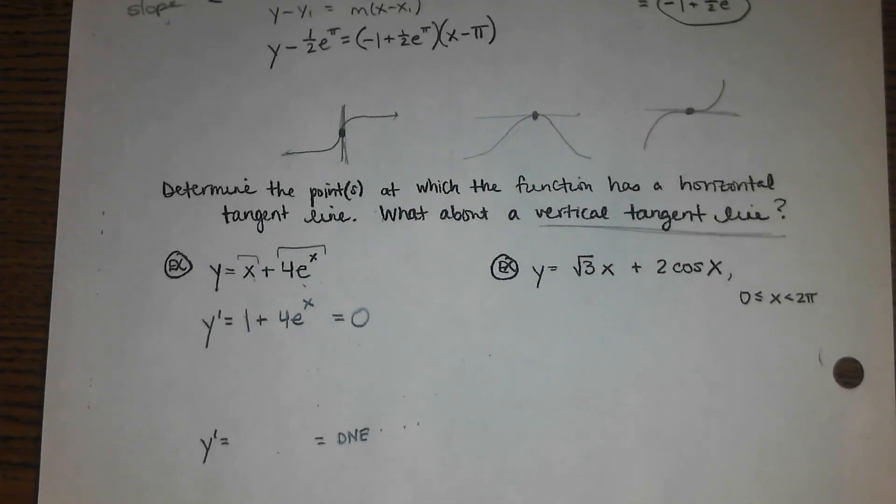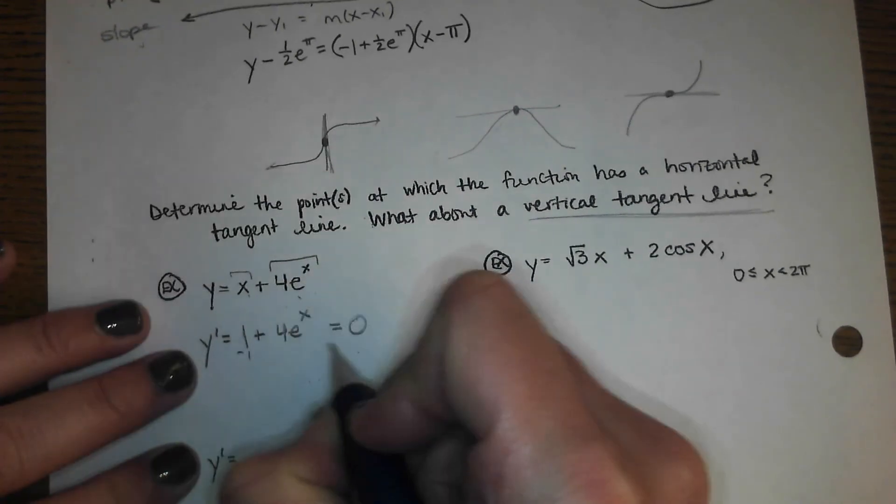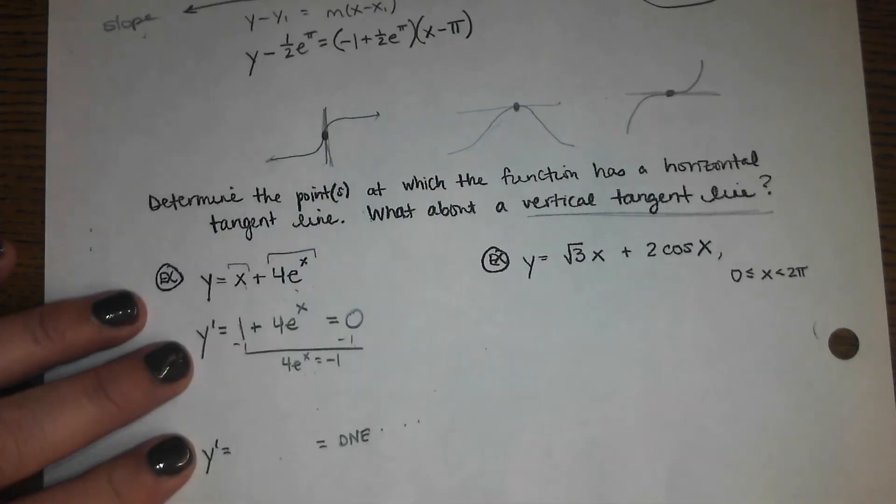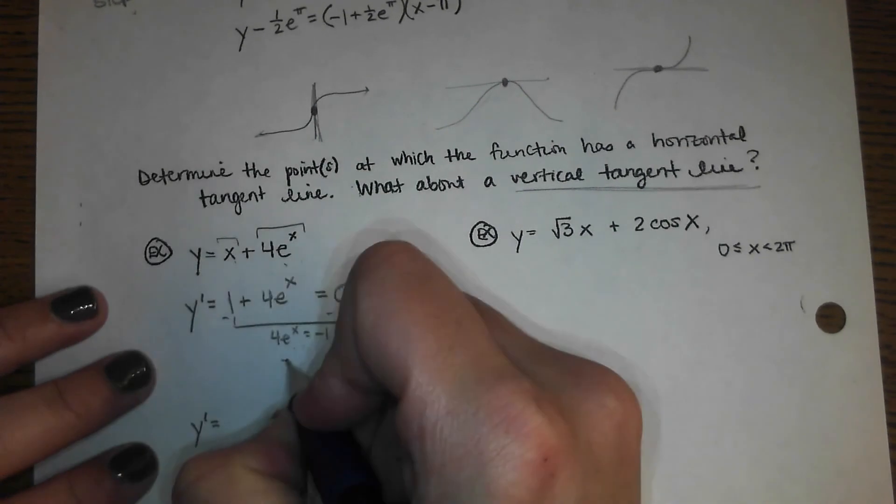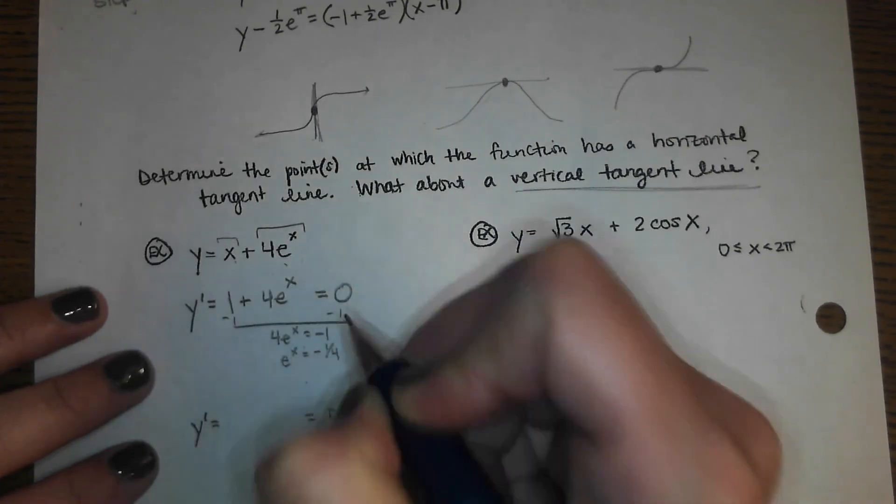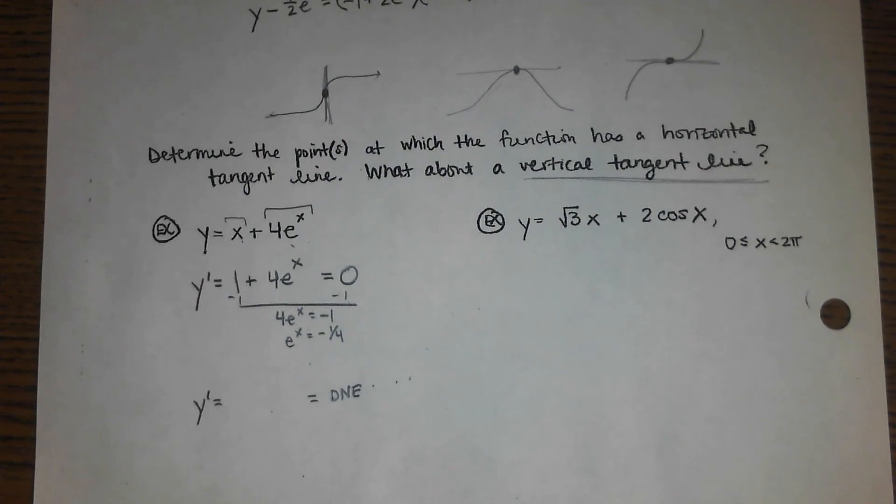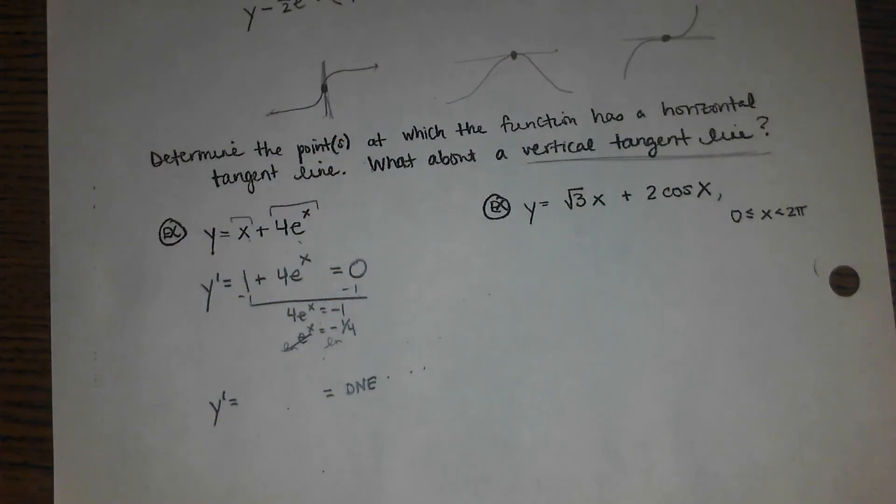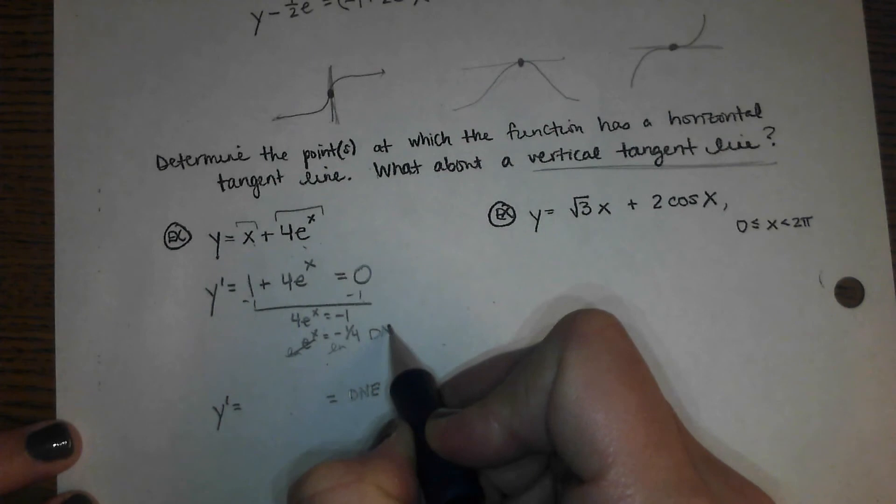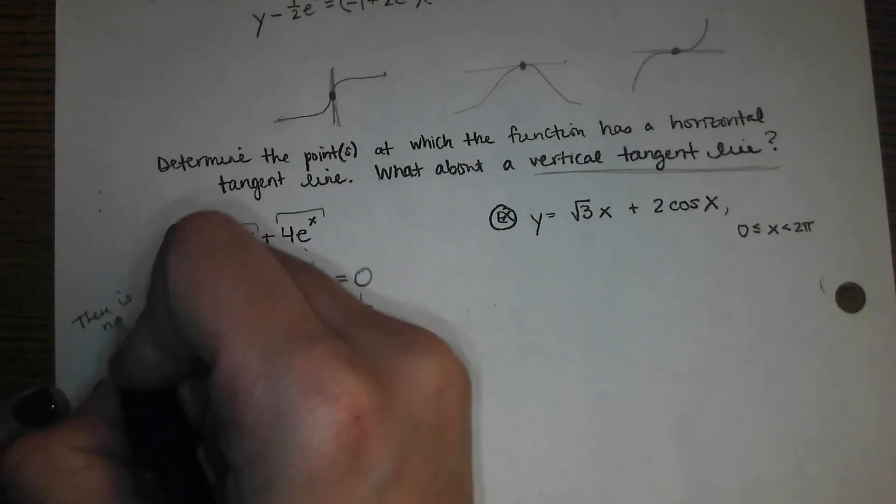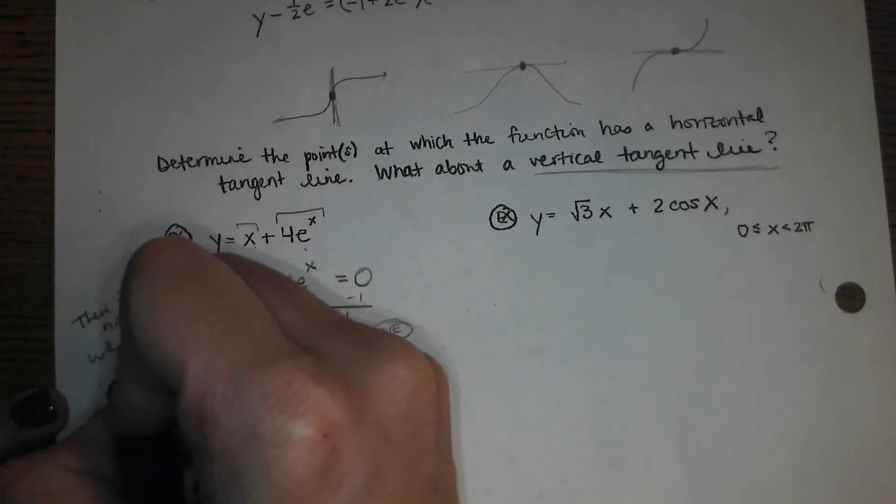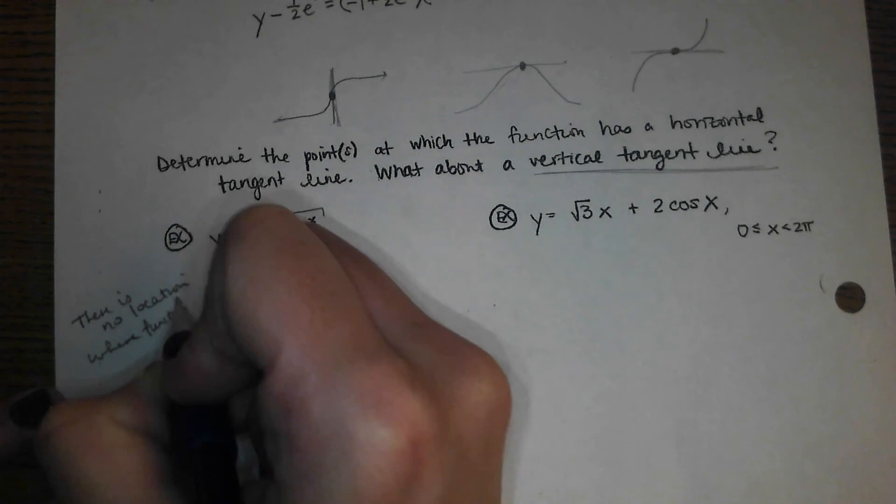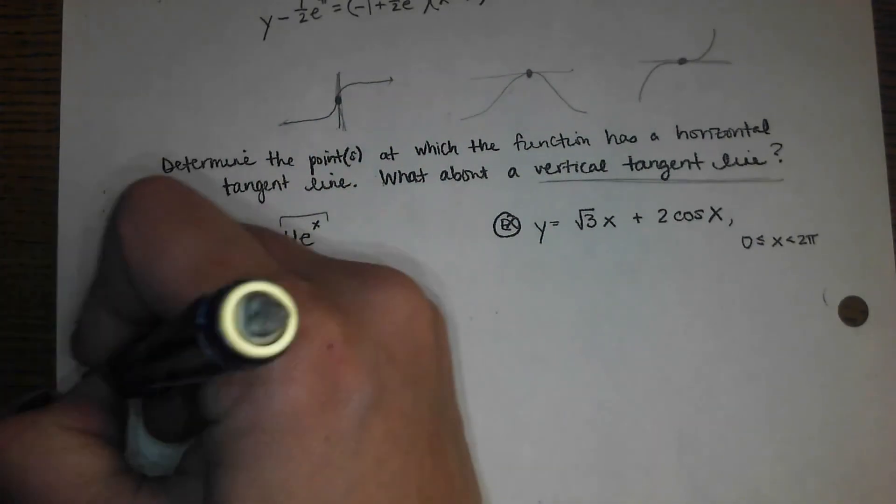And then 4e to the x just remains 4e to the x. We want to find the point. So we have to start by finding the x coordinate of the point. So subtract 1 from both sides. 4e to the x equals negative 1. Divide by 4 on both sides. E to the x equals negative 1 fourth. What do you have to do to both sides to solve for x? Ln. What's going to happen when you try to take the ln of a negative? Does not exist.